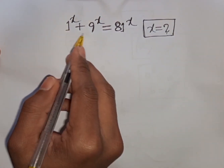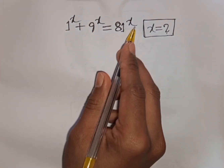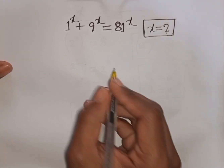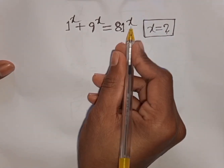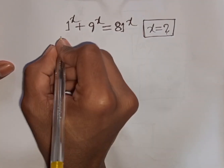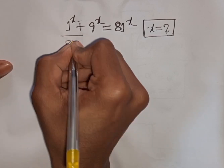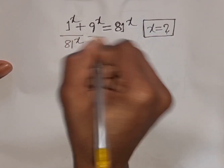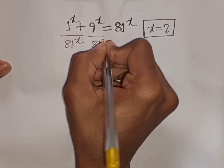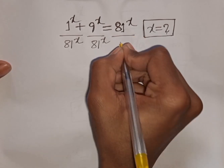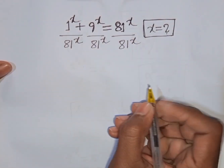1 power x plus 9 power x is equal to 81 power x. Find the value of x. First, we divide by 81 power x on both sides: divided by 81 power x on each term.